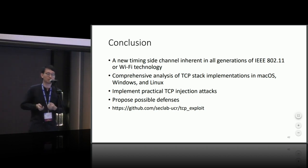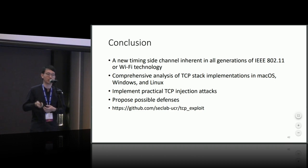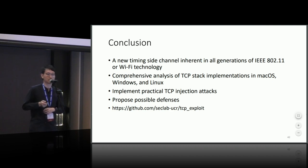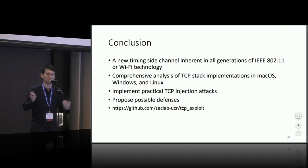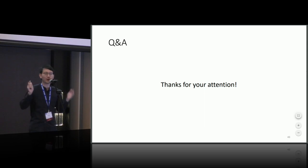To conclude: we found a new timing side channel inherent in all generations of wireless technology. The timing side channel is reliable and amplifiable, and it's almost impossible to fix without substantial change to the wireless specification. It affects Windows, macOS, and Linux — verified by analyzing their TCP stack implementations and conducting real-world attacks. We discussed possible defenses to alleviate this issue. The source code of the attack is publicly available online.